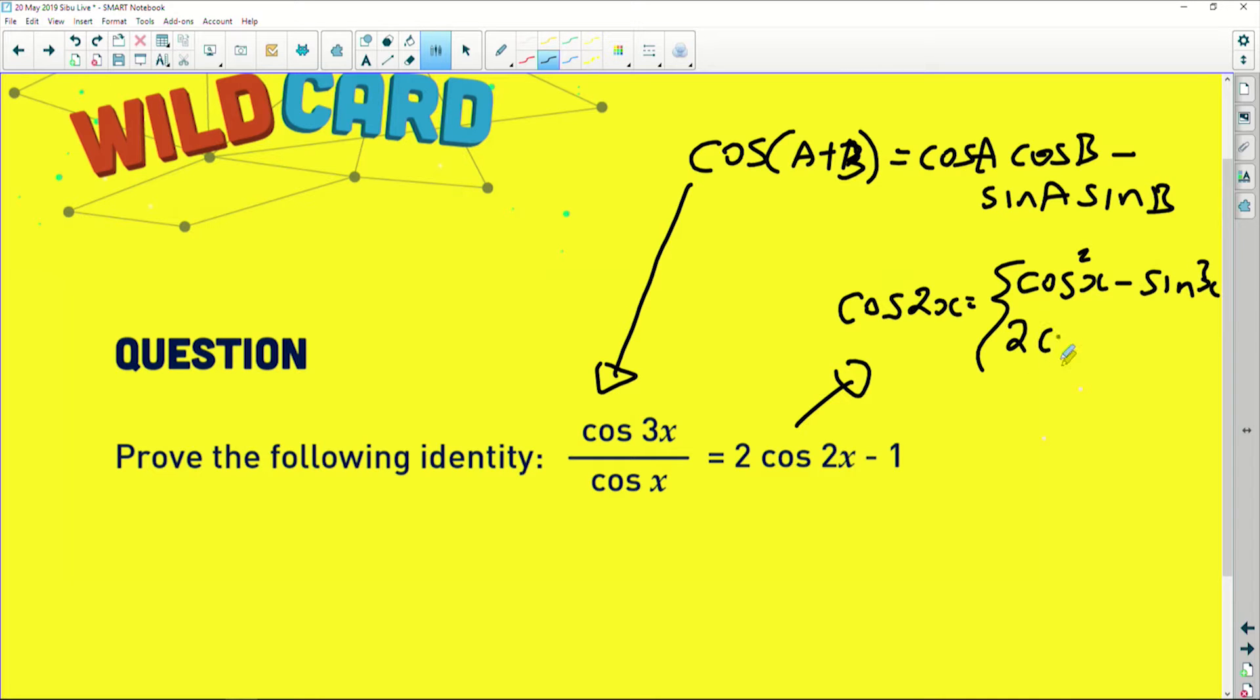So this can be expressed as cos squared x minus sine squared x. It can also be written as 2 cos squared x minus 1. It can also be written as 1 minus 2 sine squared x. There is also the double angle of sine which we might need.